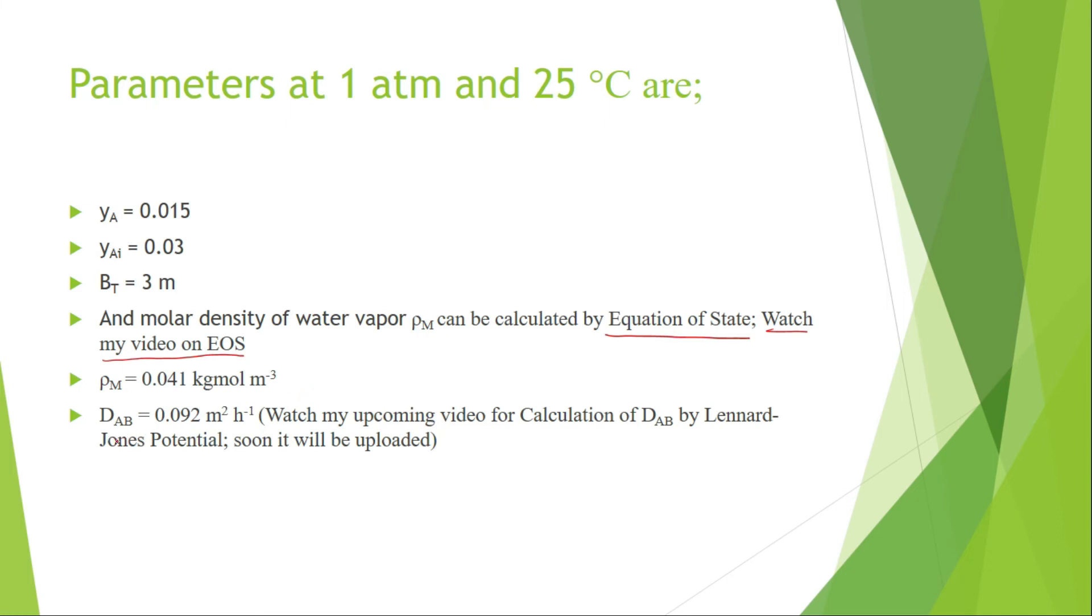The D_AB, the diffusivity of water vapor into air, equals 0.092 meter squared per hour. I will prepare an upcoming video on how I calculated this diffusivity by using Lennard-Jones potential. Soon I will upload it.